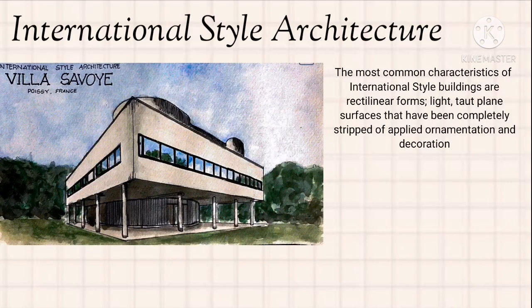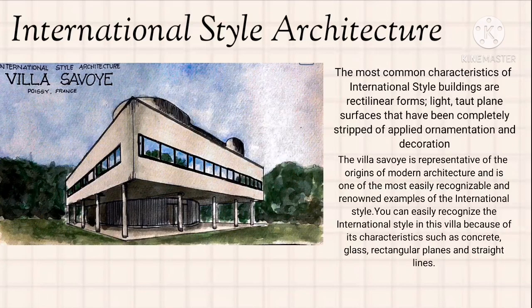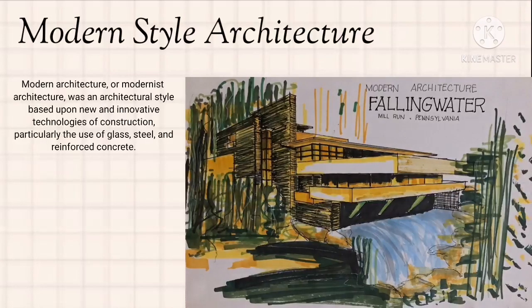International style architecture is most commonly characterized by linear forms, flat plane surfaces that have been completely stripped of applied ornamentation and decoration. The Villa Savoye in Paris, France is representative of the origins of modern architecture and one of the most easily recognizable and renowned examples of the international style. You can easily recognize the international style in this villa because of its characteristics such as concrete, glass, rectangular planes, and straight lines.